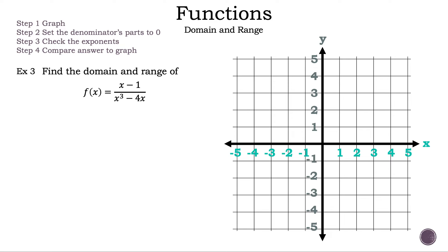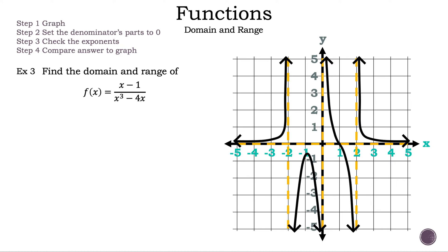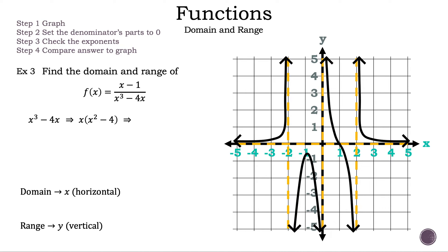Let's move on to example three. Find the domain and range of the function f of x equals x minus one all over x cubed minus four x. Let's put up the graph to help us visually, and put what we want to find — the domain and range. First, let's find the domain. We bring down x cubed minus four x. Since both terms share an x, let's factor out an x. So we have x times the quantity of x squared minus four. Now we have a difference of squares. We factor x squared minus four as the quantity of x plus two times the quantity of x minus two, and set that equal to zero. So x equals zero, negative two, or two.